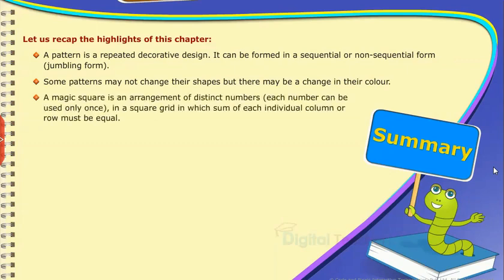A magic square is an arrangement of distinct numbers. Each number can be used only once in a square grid in which sum of each individual column or row must be equal.